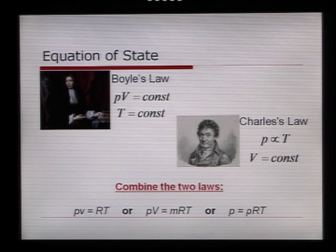The pressure times the specific volume is equal to some constant R times T. Alternatively, this can be written as pressure times the actual volume is equal to the mass times the ideal gas constant times the temperature. Or finally, pressure can be equal to the density times the ideal gas constant times T.